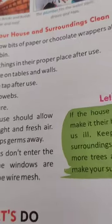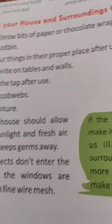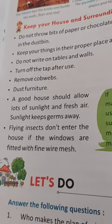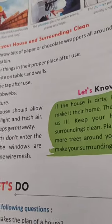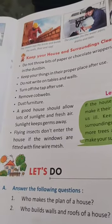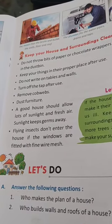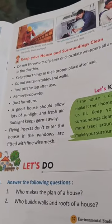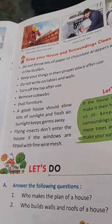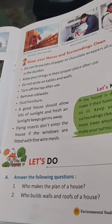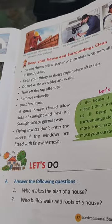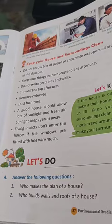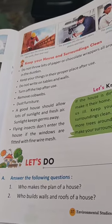Keep your house and your surroundings clean, because it gives you a healthy environment and is very hygienic. Do not throw bits of paper or chocolate wrappers here and there. Keep your things in a proper place. Do not write on tables and walls. Turn off the tap after use. Remove cobwebs and dust the furniture. A house should allow sunlight and fresh air, which keeps germs away.